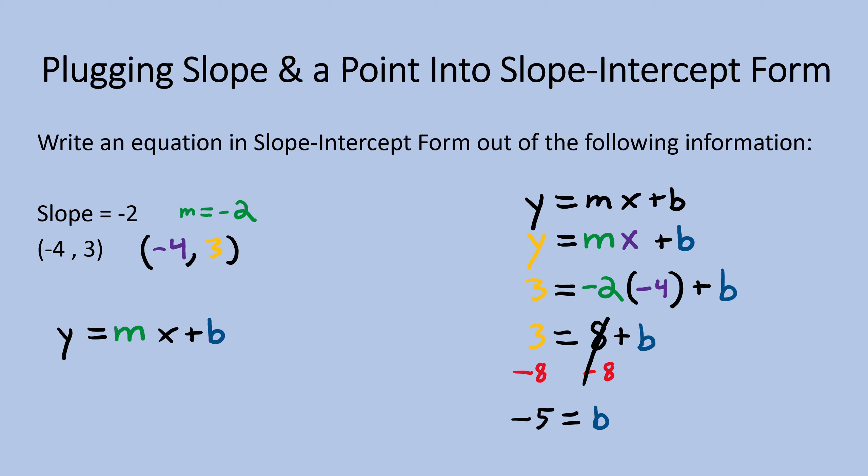Now we can start filling it in and wrap up this problem. We can plug in our negative 2 as our slope m and negative 5 as our y-intercept b and we're done. Let's try one last problem.